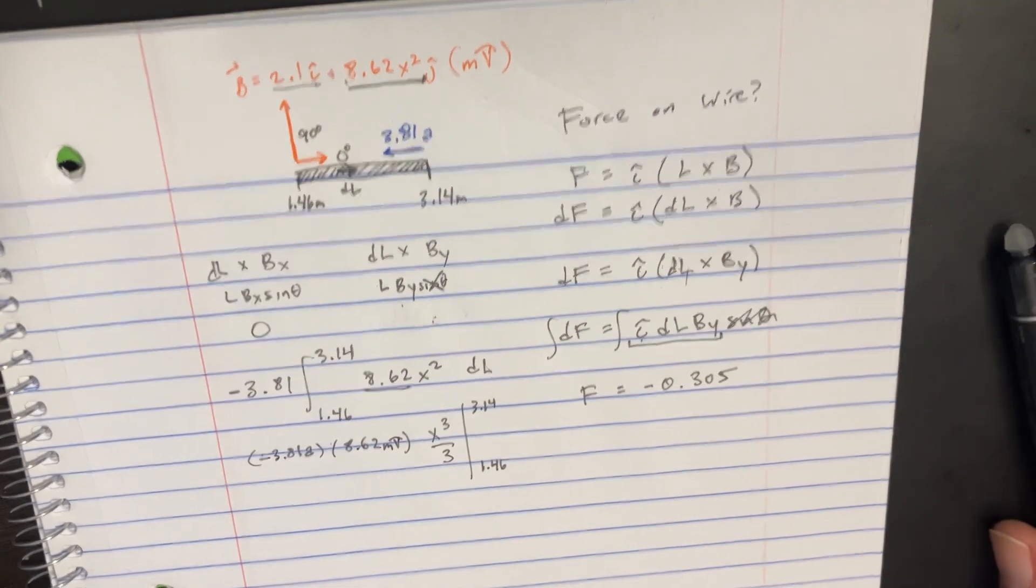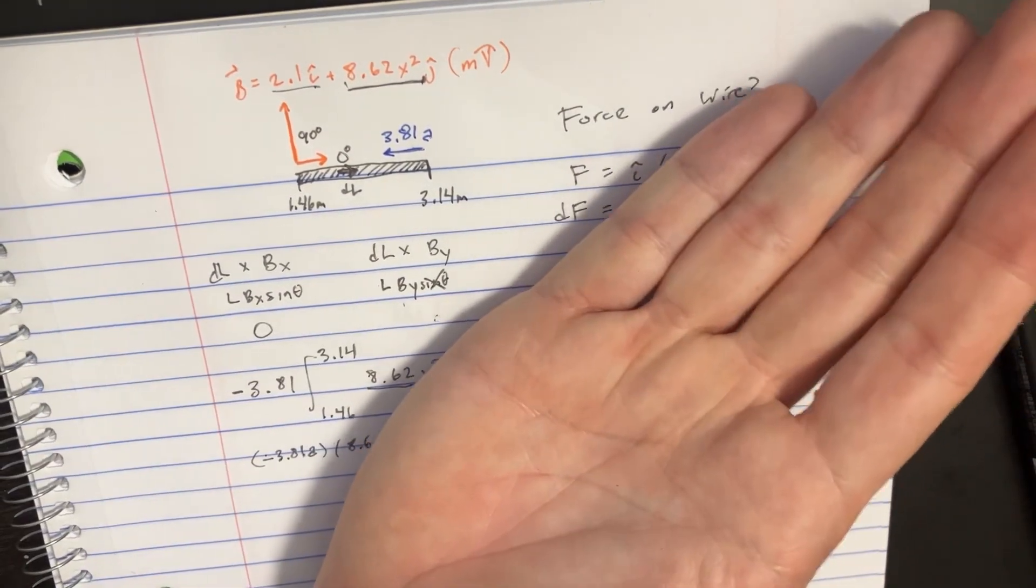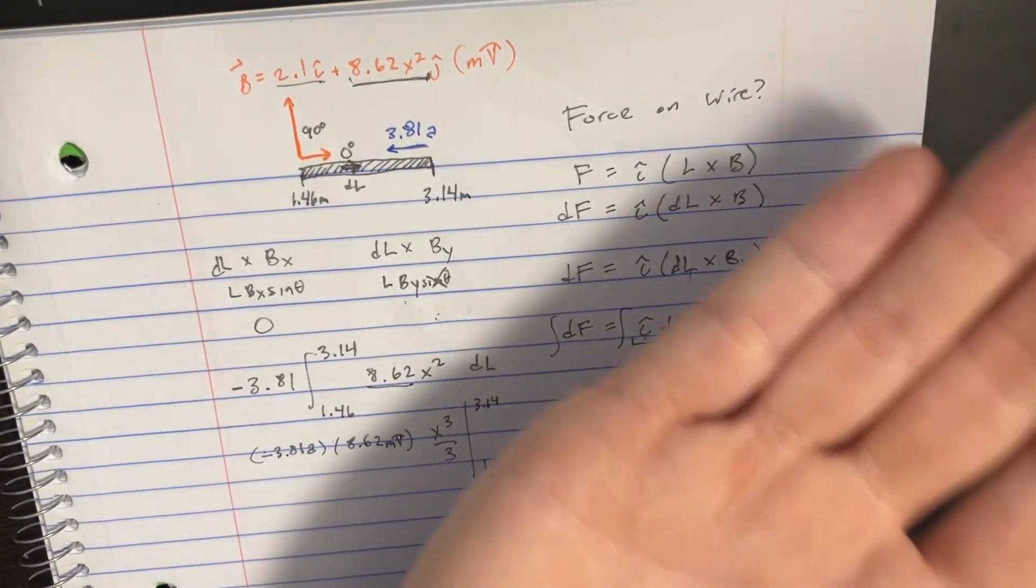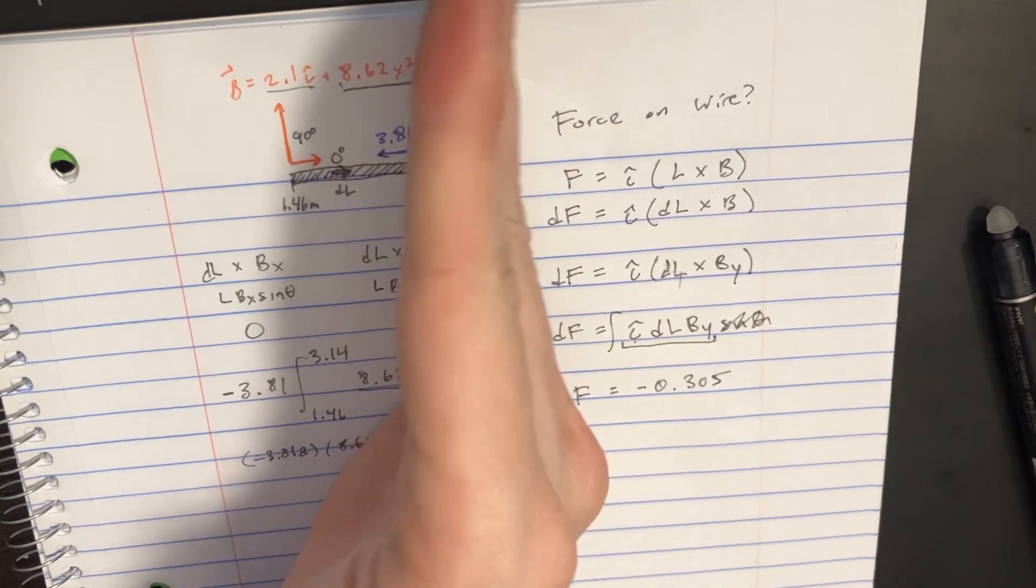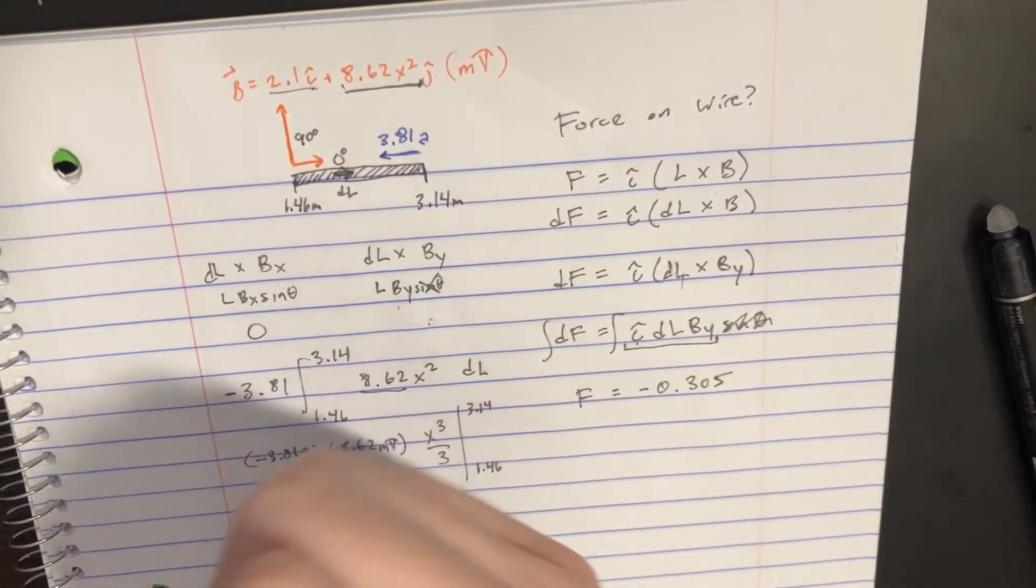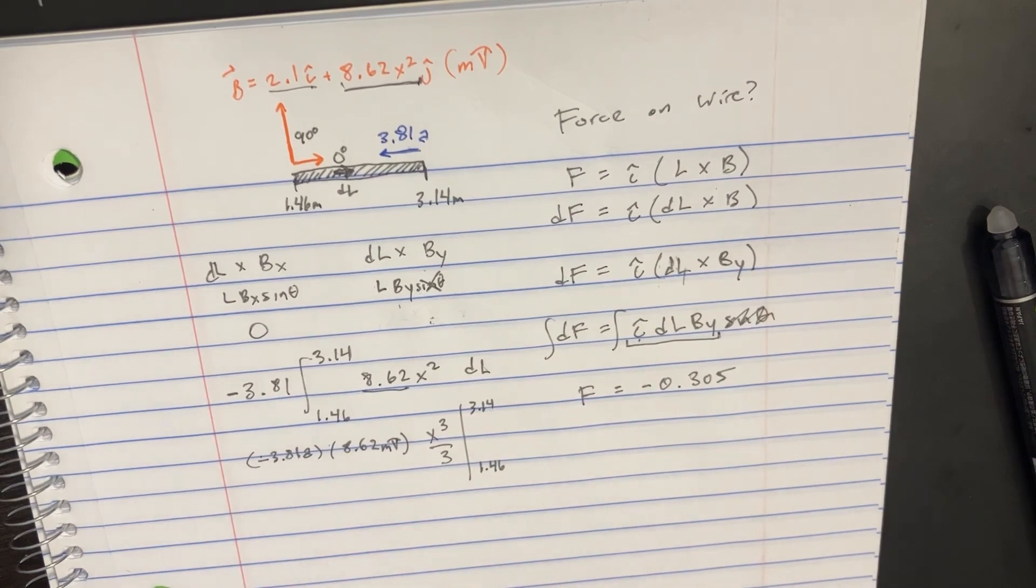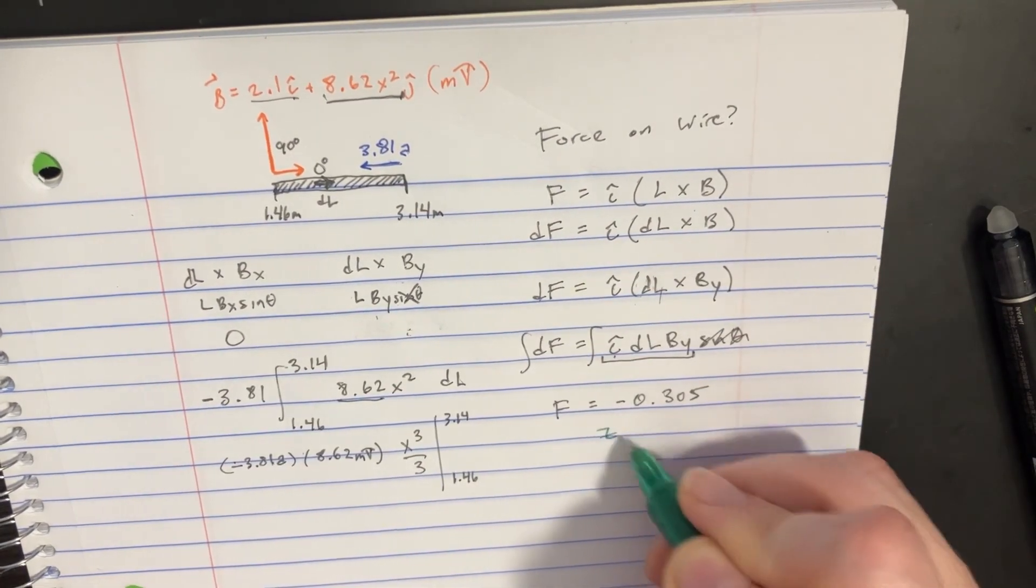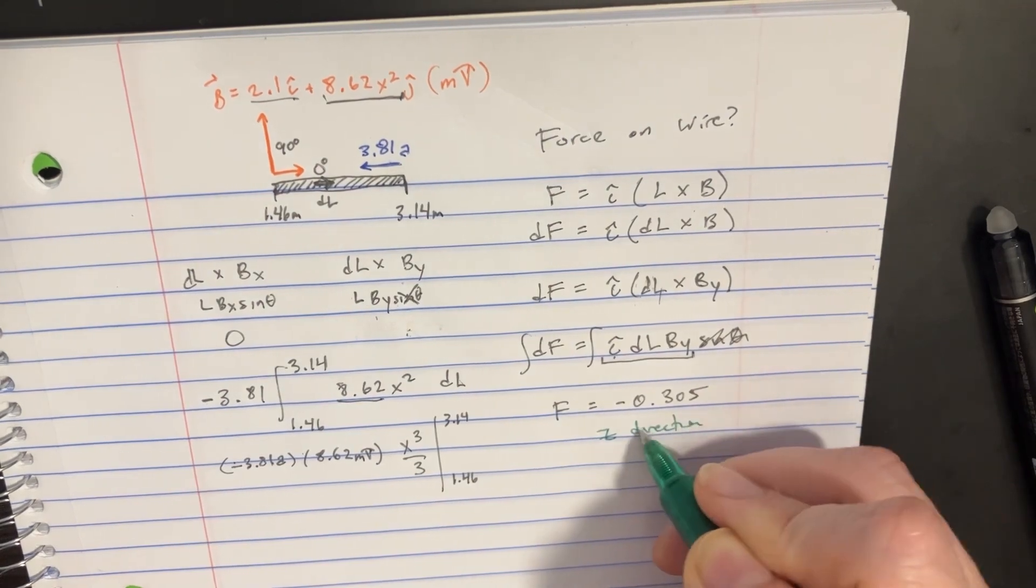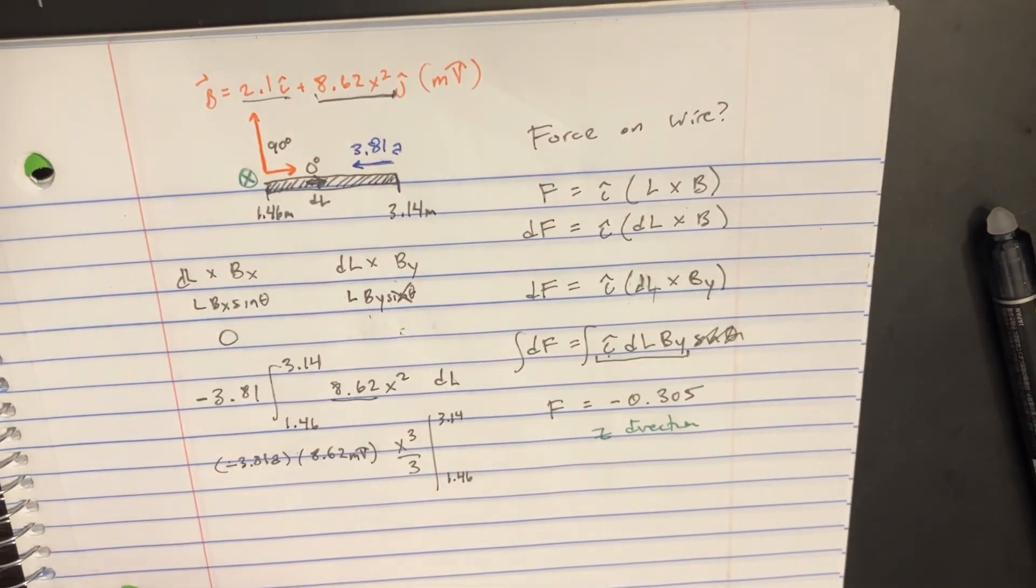If we're trying to figure out what direction that is, we do the cross product. The force should be pointing upwards, but because it's negative, it's going downwards. This is in the z direction - into the page in the negative z direction.